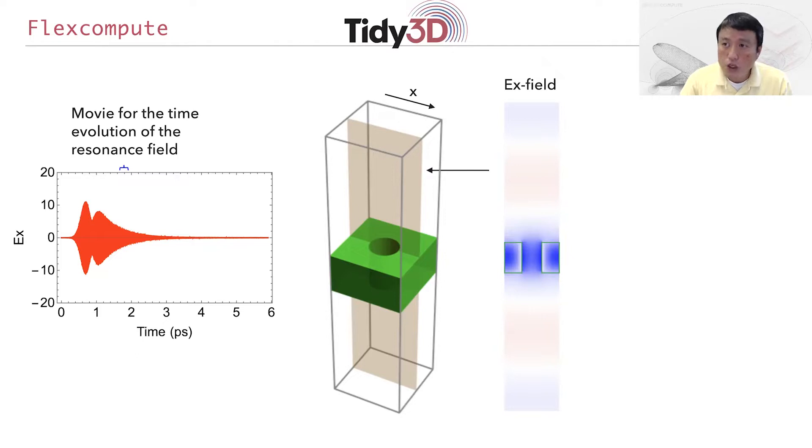This is a field plot, but you can also generate a movie. In the movie, you can see that in the structure, the field oscillates back and forth, and then you produce a pure plane wave radiating out outside the structure.